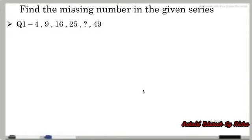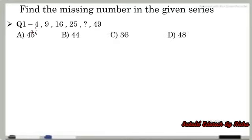Question number 1 is: 4, 9, 16, 25, ___, 49. When we see this question, the common pattern is that 2×2 = 4, 3×3 = 9, 4×4 = 16, 5×5 = 25. This is the common pattern followed in this question. So next we multiply 6×6, which is 36. So 36 is the right answer for this question.